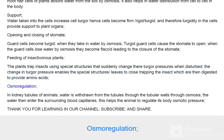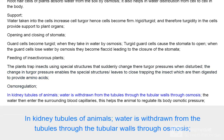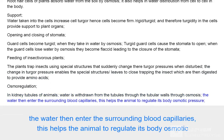Osmoregulation: In the kidney tubules of animals, water is withdrawn from the tubules through the tubular walls by osmosis. The water then enters the surrounding blood capillaries, helping the animal to regulate its body osmotic pressure.